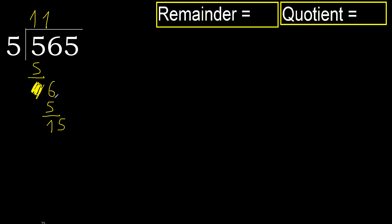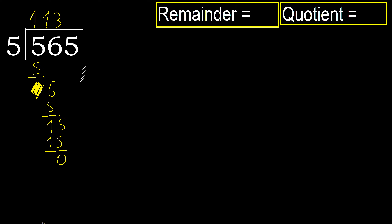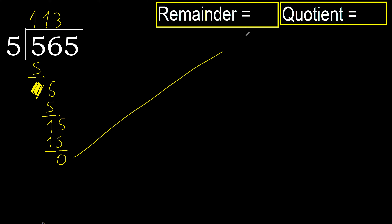Bring down 5, giving 15. 5 multiplied by 3 is 15 — not greater. Subtract, remainder is 0. There is no next number, therefore we finish. The answer is 113 with no remainder.